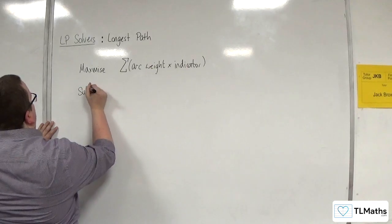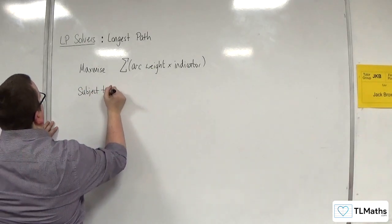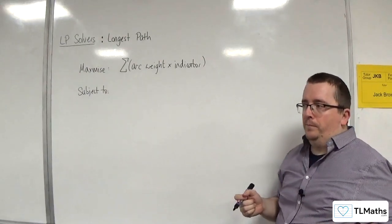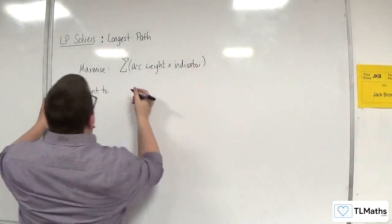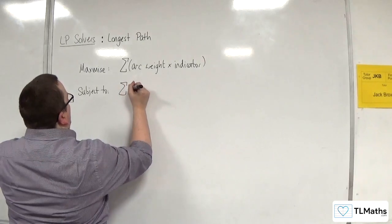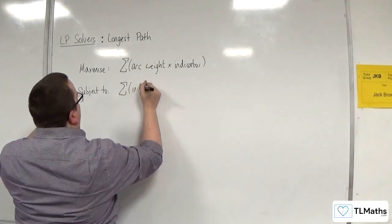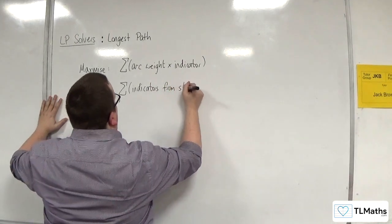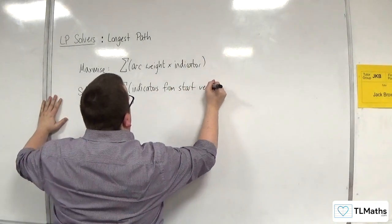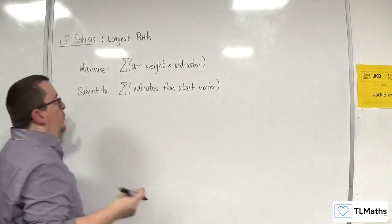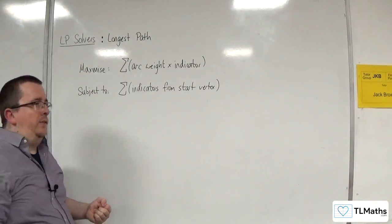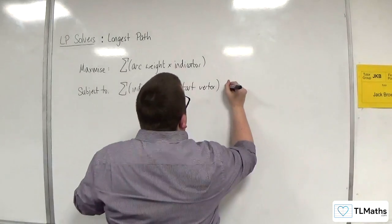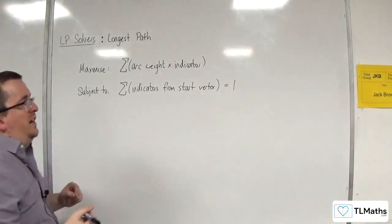Then come the constraints. These are very similar to what we did for shortest path. We're going to have the sum of all the indicators from the start vertex—so all the routes out—that's going to be equal to 1 because only one of them is going to get picked. The rest are going to be 0.